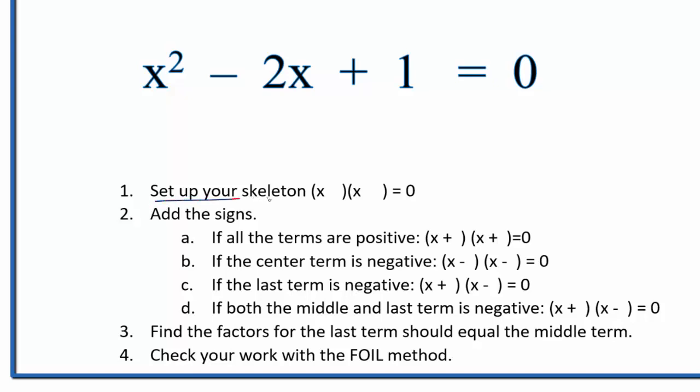First, we'll set up our skeleton equation. That'll look like this. Next, we'll add the signs to our skeleton equation. The center term here has a negative and a positive, so the center term is negative. If the center term is negative, we'll have (x - )(x - ) in our skeleton. Let's write that in: (x - )(x - ).